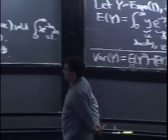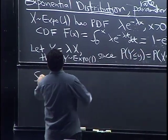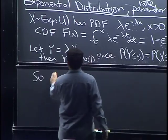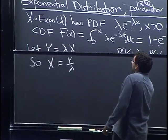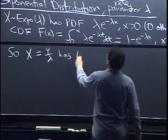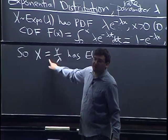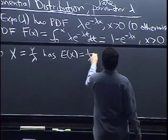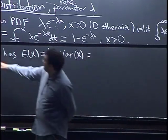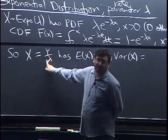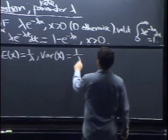Coming back to the general exponential: since Y = λX, we have X = Y/λ. Taking the expected value, lambda is a constant that comes out, so X has mean 1/λ. For the variance, constants come out squared, so Var(X) = (1/λ²)·Var(Y) = 1/λ². So now we know the mean is 1/λ and the variance is 1/λ².